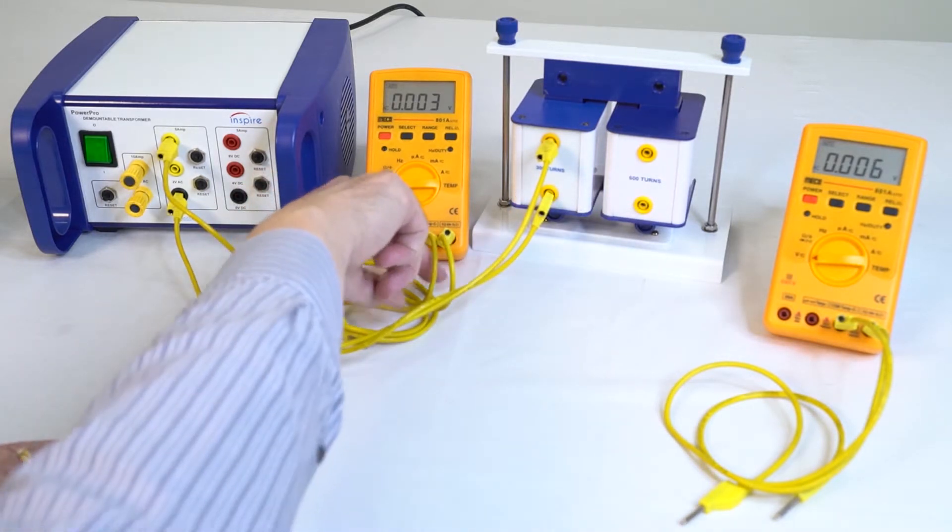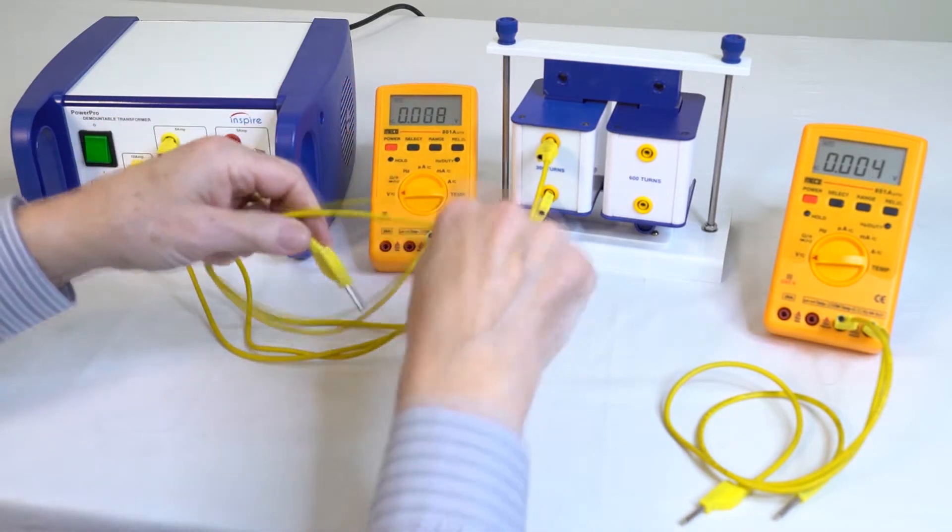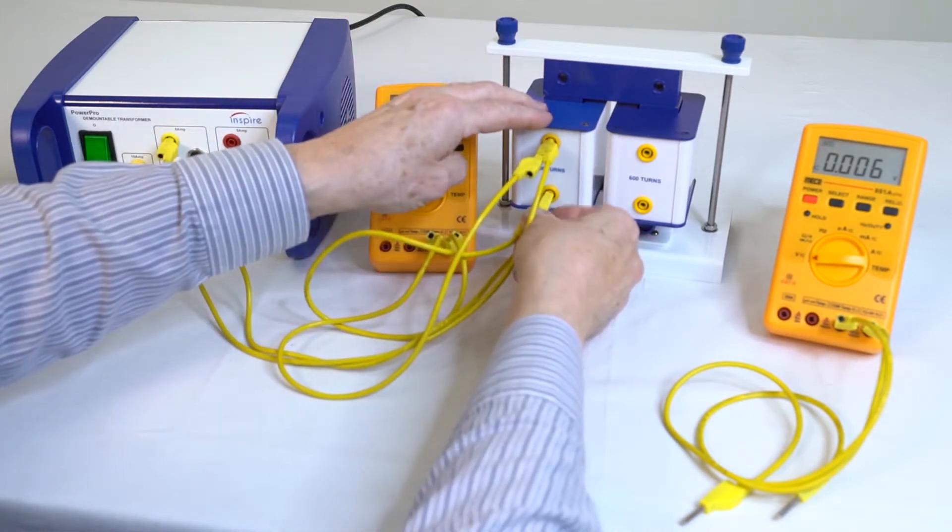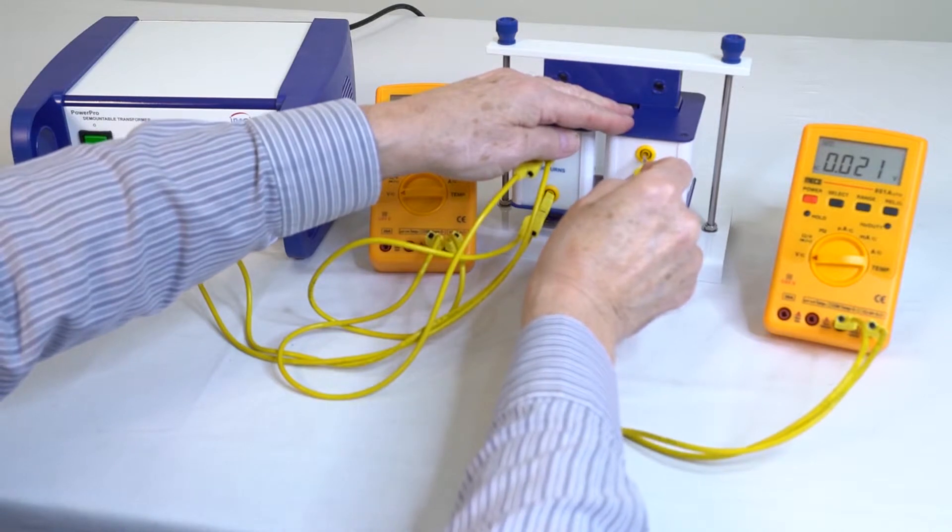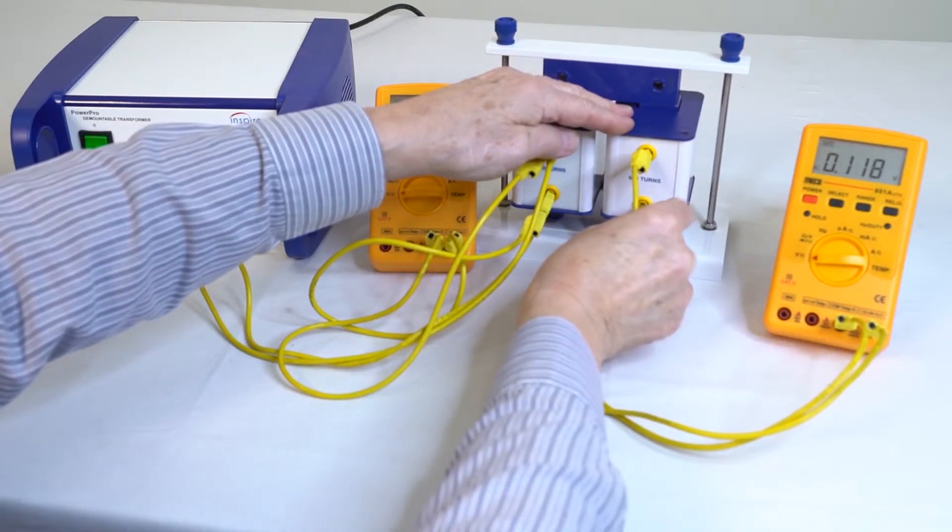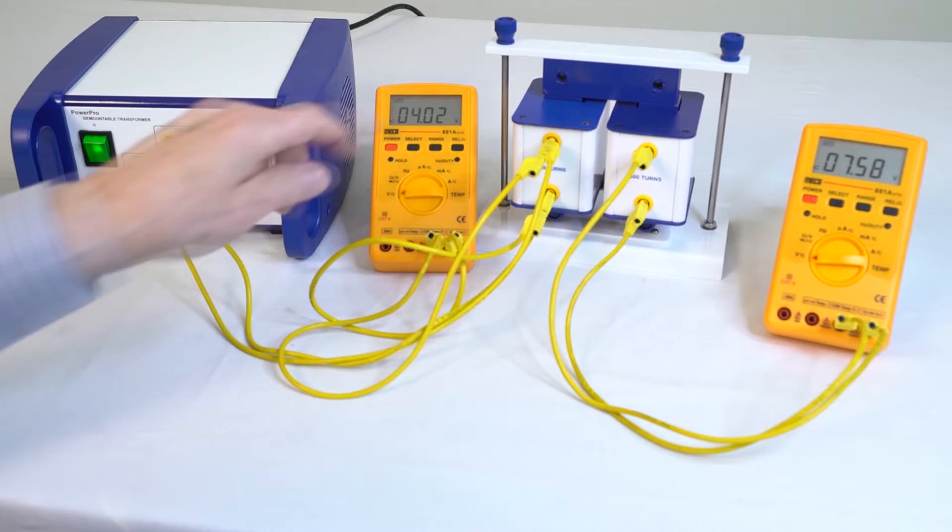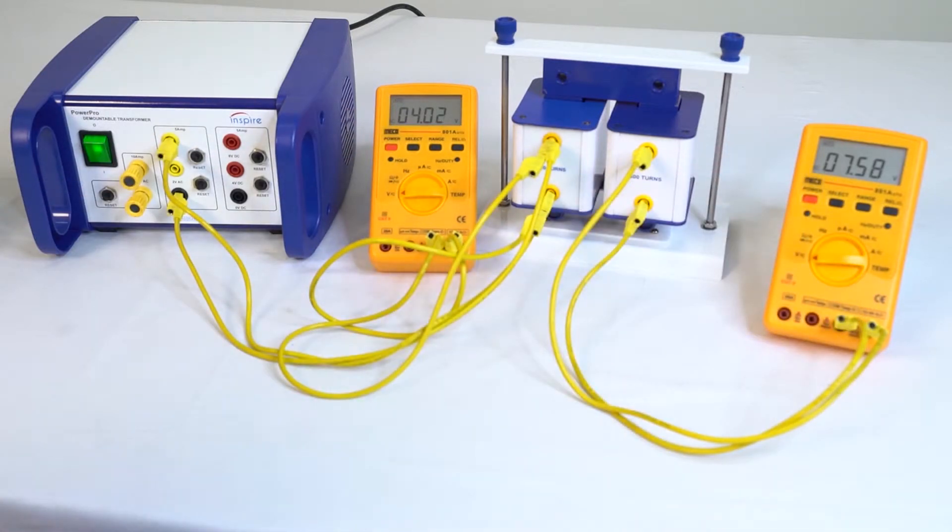We can monitor the input and output voltage using two AC voltmeters. The primary input is 4V, the secondary output is close to 8V in proportion to the turns ratio.